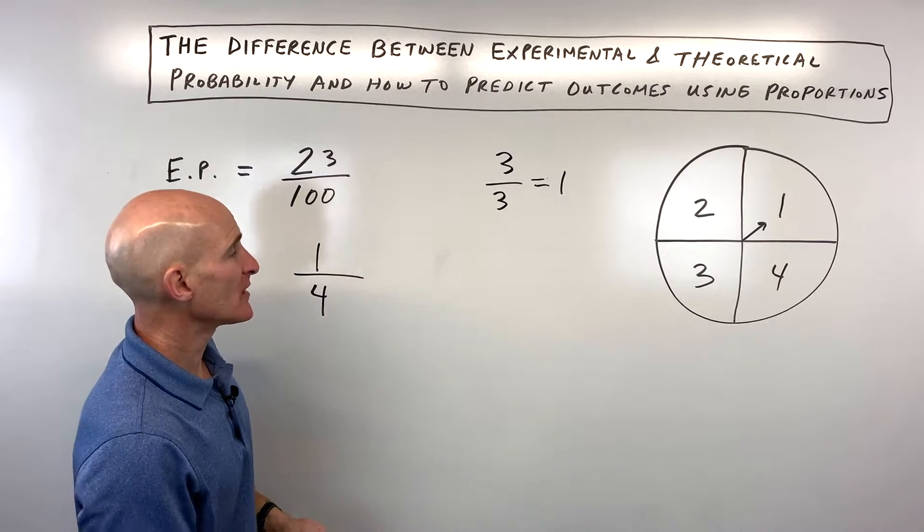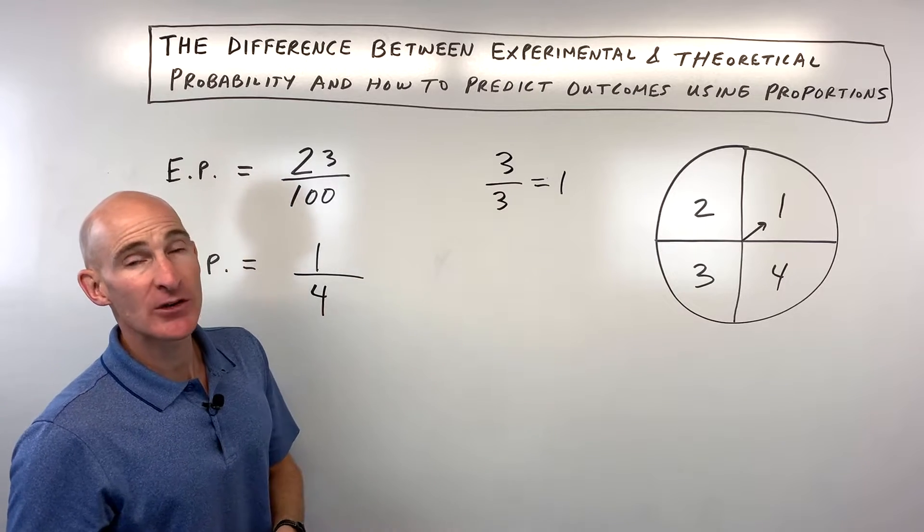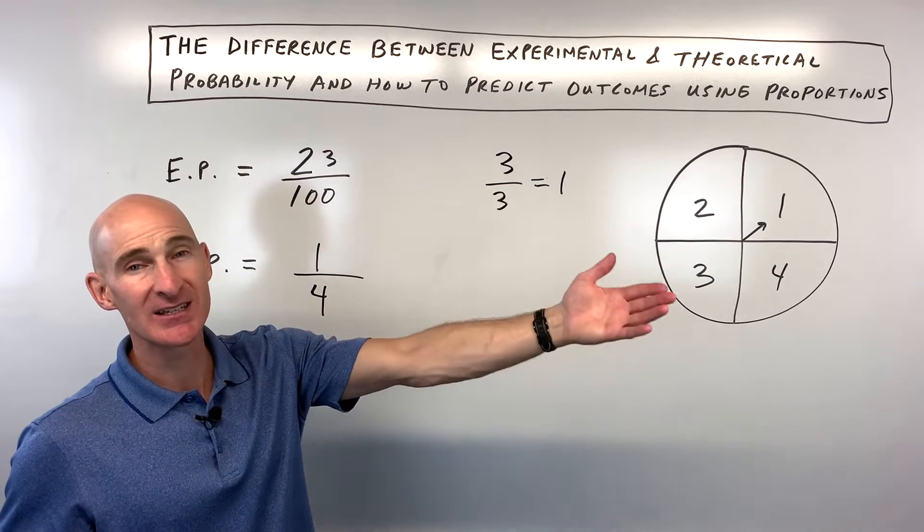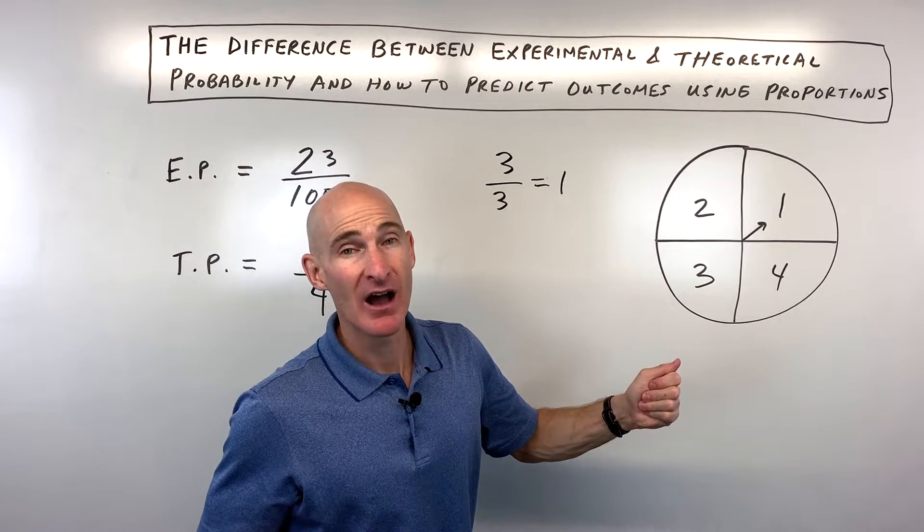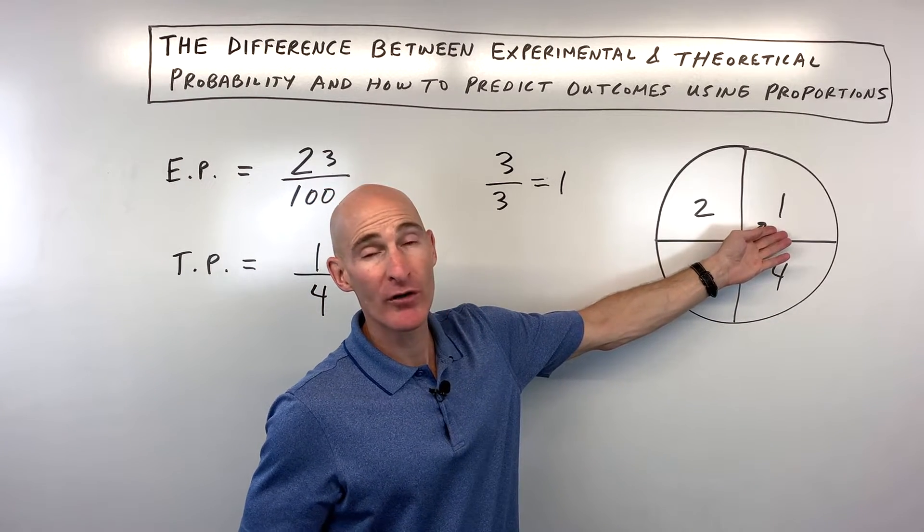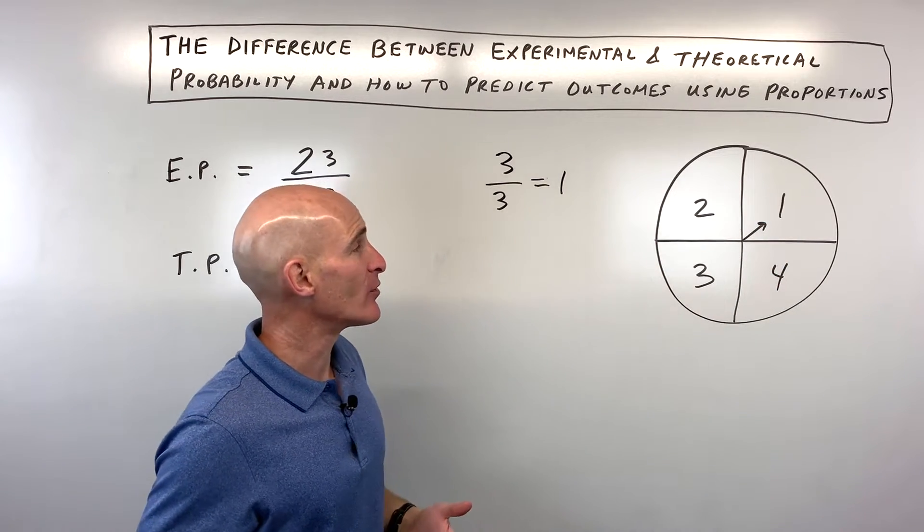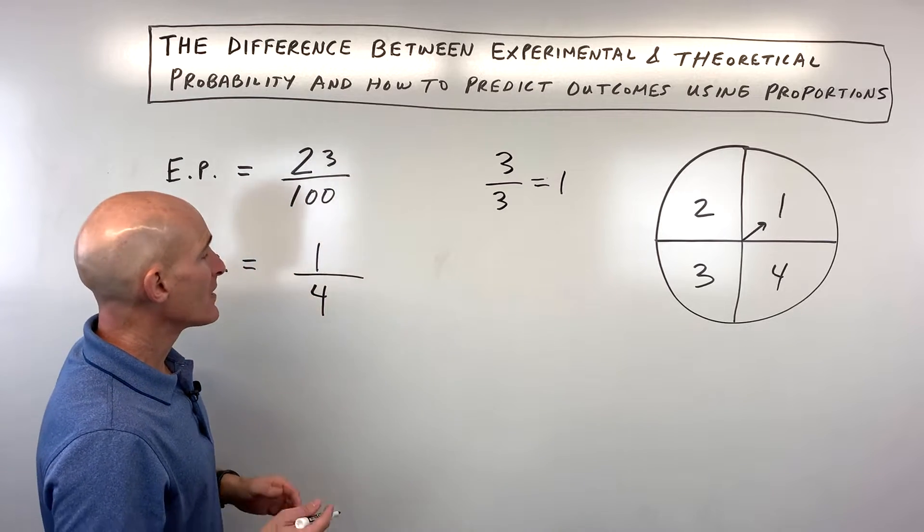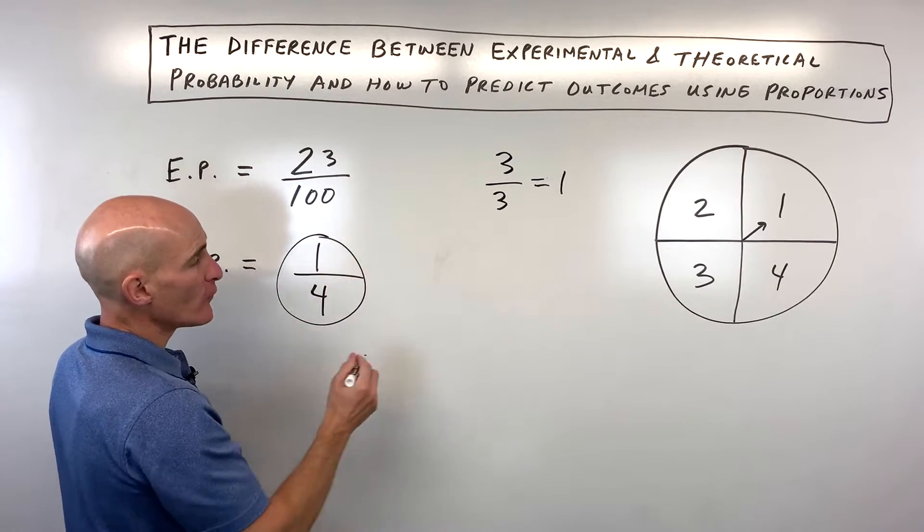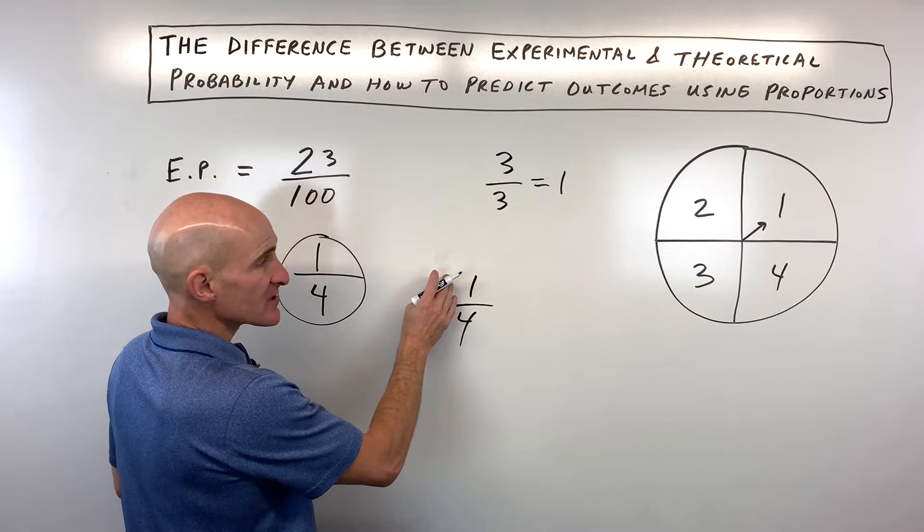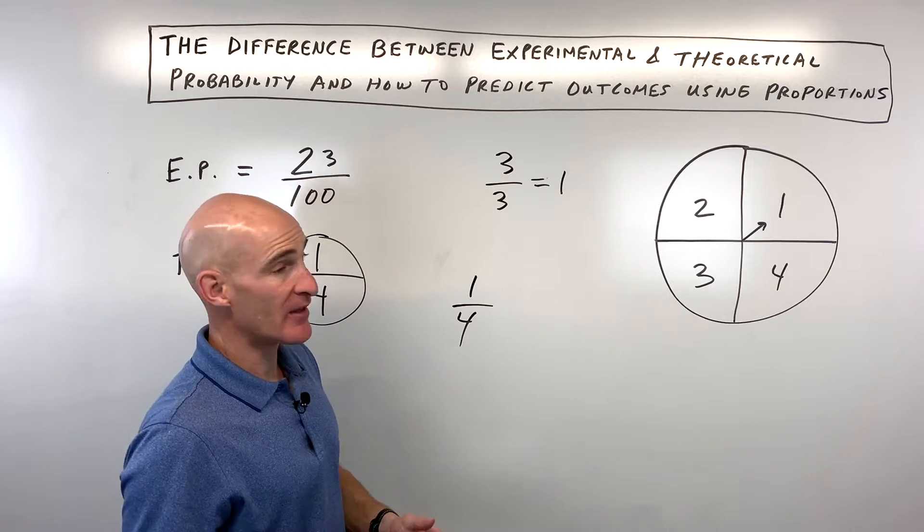And so what we can do is when we look at the theoretical probability, again, making some assumptions that this is a fair spinner, we might say to ourselves, could we predict if we were to spin the spinner like 10,000 times, what would be the number of times it would land on the number one? So our expected number of ones. Well, here's where we can use a proportion. We can use our theoretical probability of one-fourth, and we can say that we get one successful outcome for every four spins, roughly.